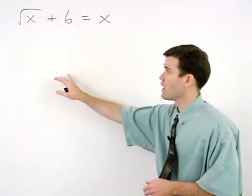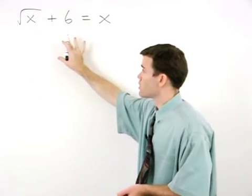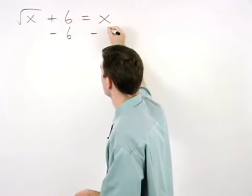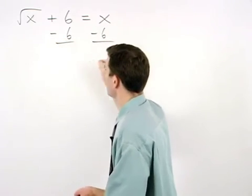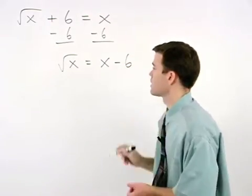We start this problem by isolating the radical on the left side of the equation. So subtracting 6 from both sides, we have the square root of x equals x minus 6.